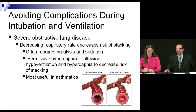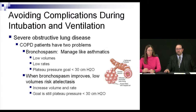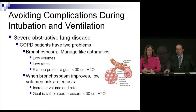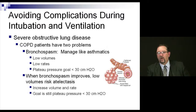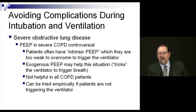Permissive hypercapnia — allowing hypoventilation and hypercapnia — helps prevent stacking, particularly in asthmatics. In COPD, when bronchospasm improves you can have problems with atelectasis, so walk the line: low volumes, low rates, plateau pressures under 30, then when worried about atelectasis begin increasing volumes. Patients with COPD can have intrinsic PEEP and may be too weak to trigger the ventilator; exogenous PEEP may help in that situation, though routine PEEP has fallen out of favor. It doesn't help all COPD patients but can be tried when the patient is not triggering the vent.